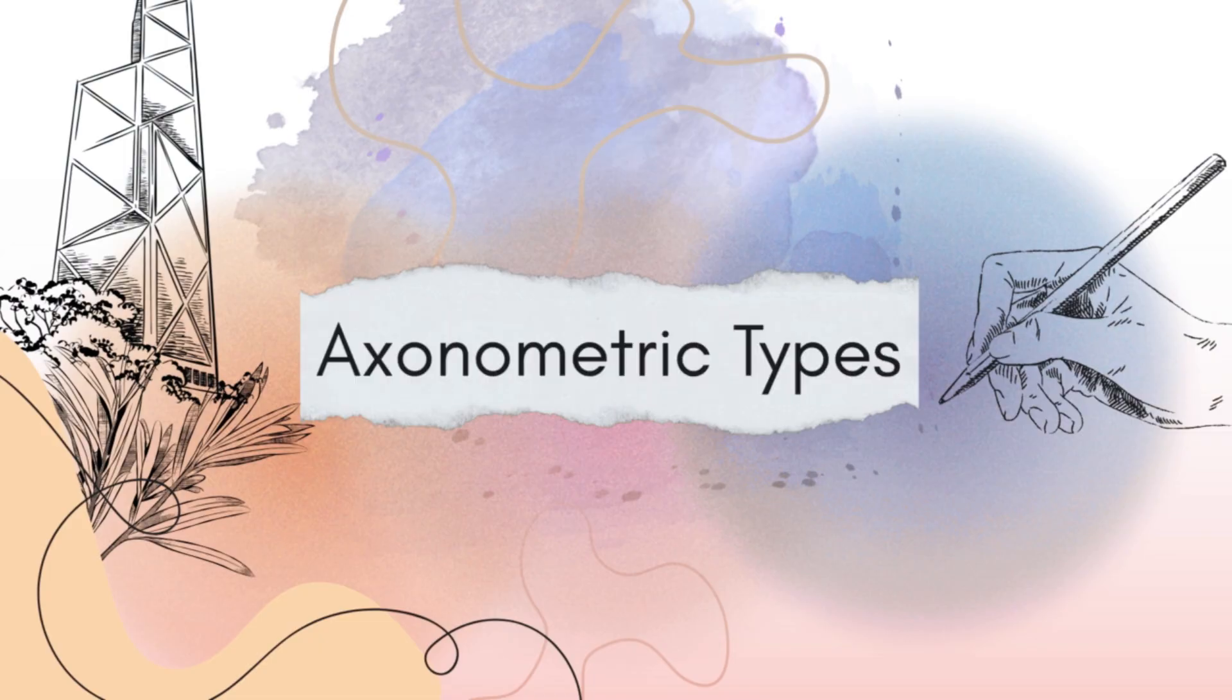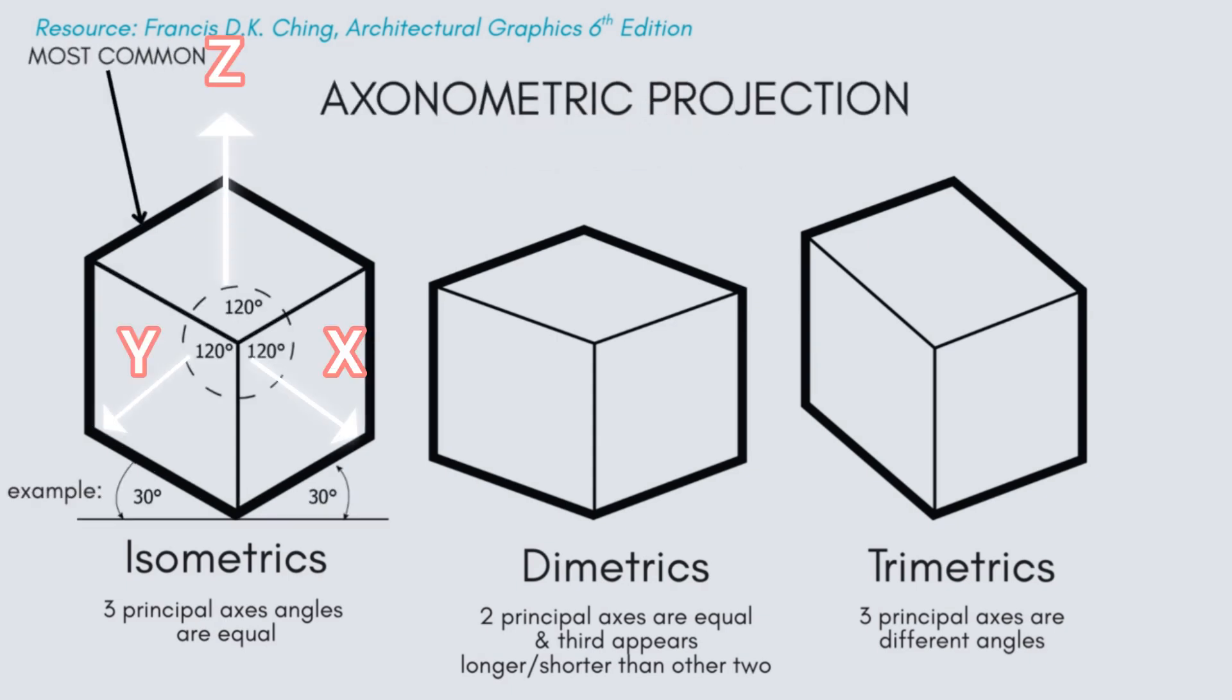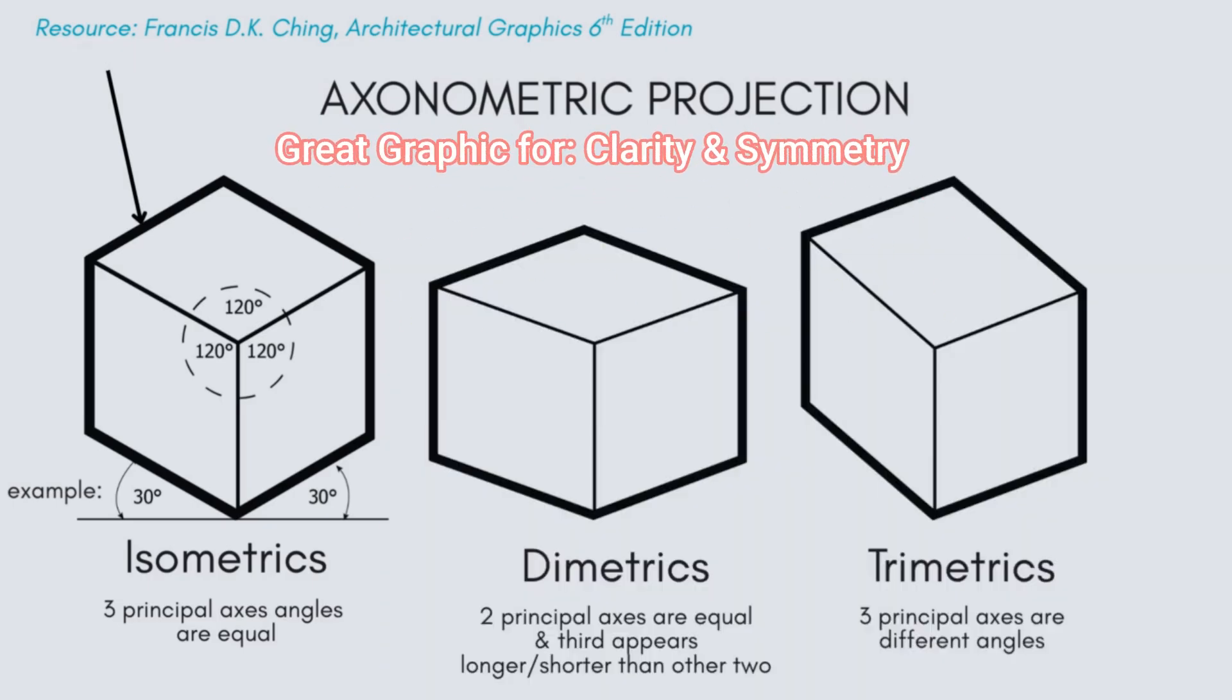Let's start by going through the three types of axons. An isometric is when the three principal axes XYZ make equal angles. It gives a clean uniform look but it can feel a bit distorted, kind of like something out of a video game or animation, though it's great for clarity and symmetry.